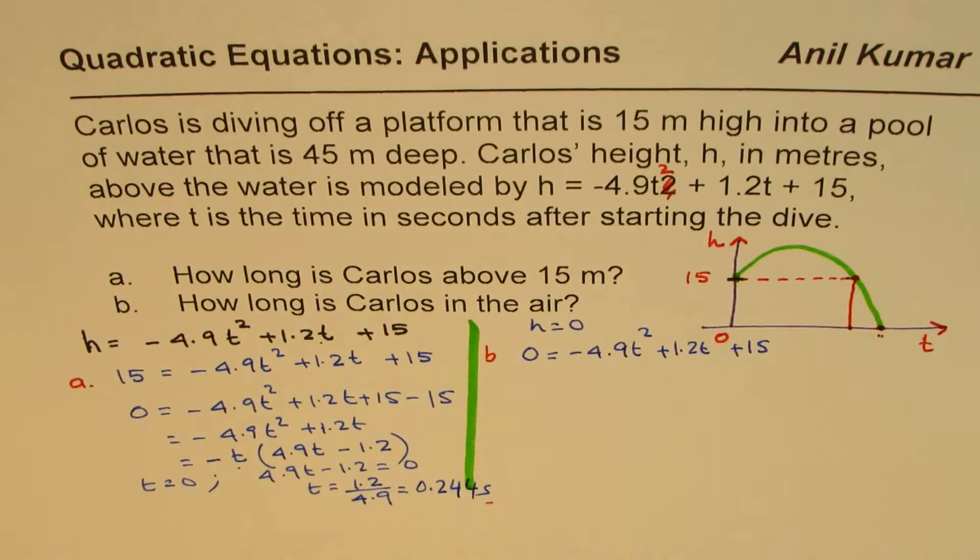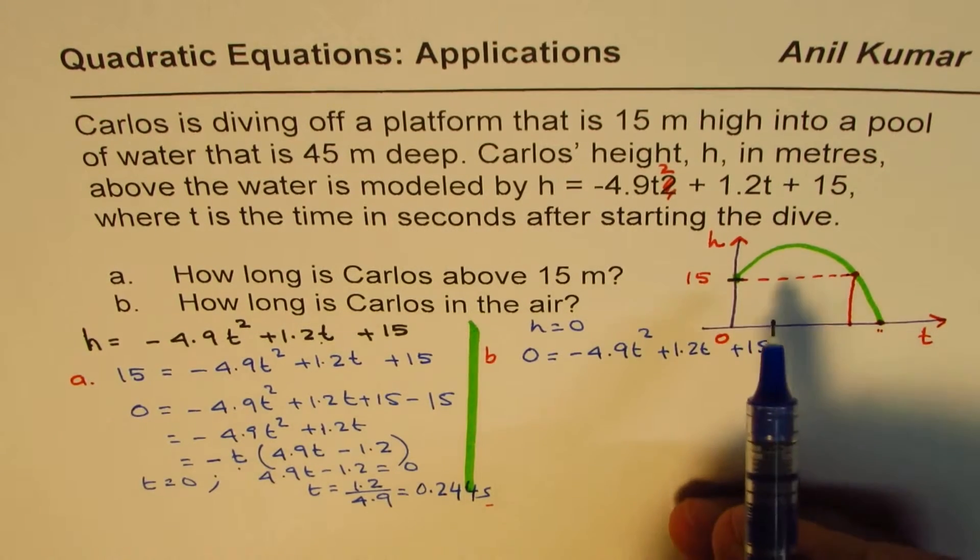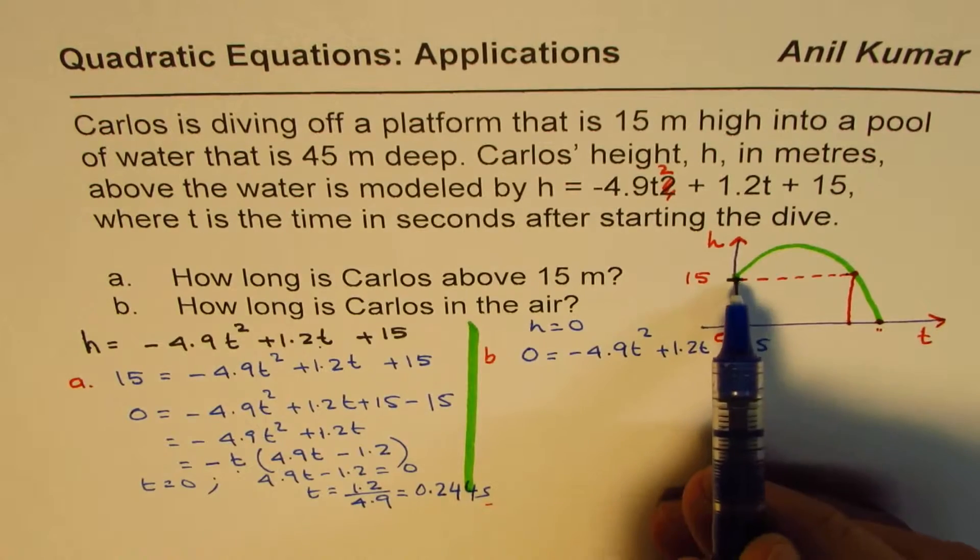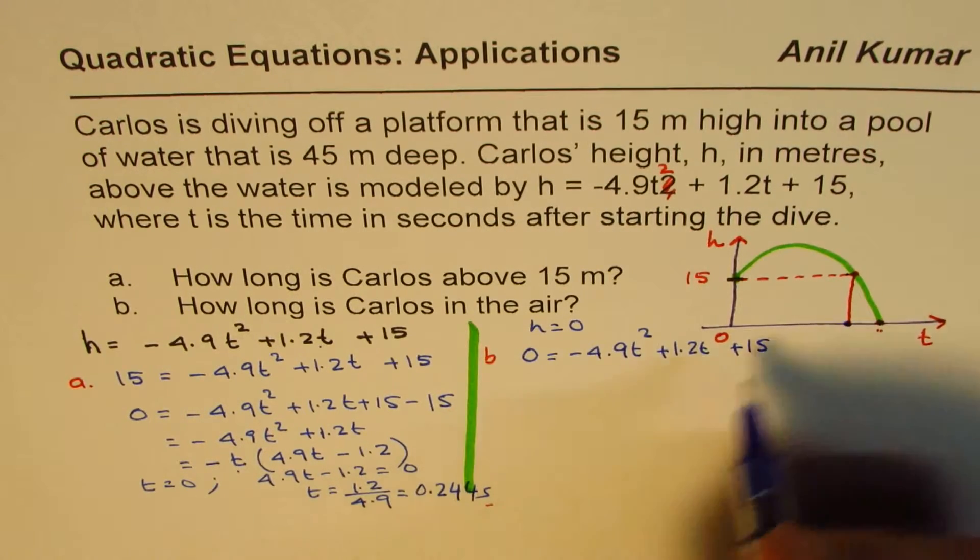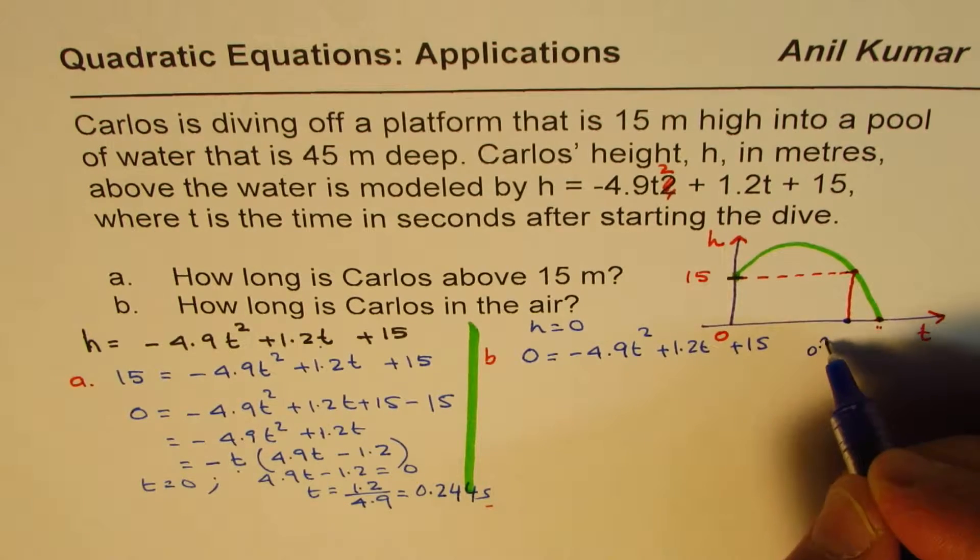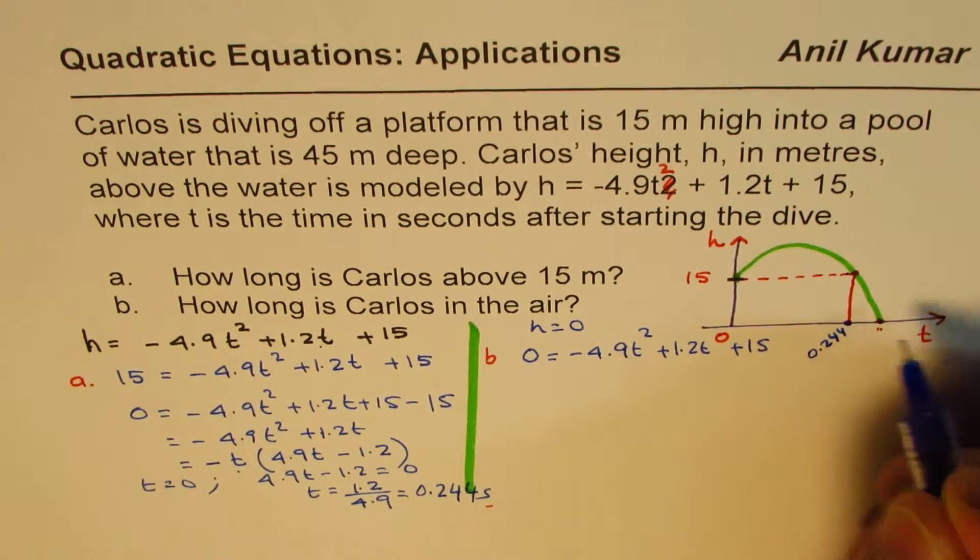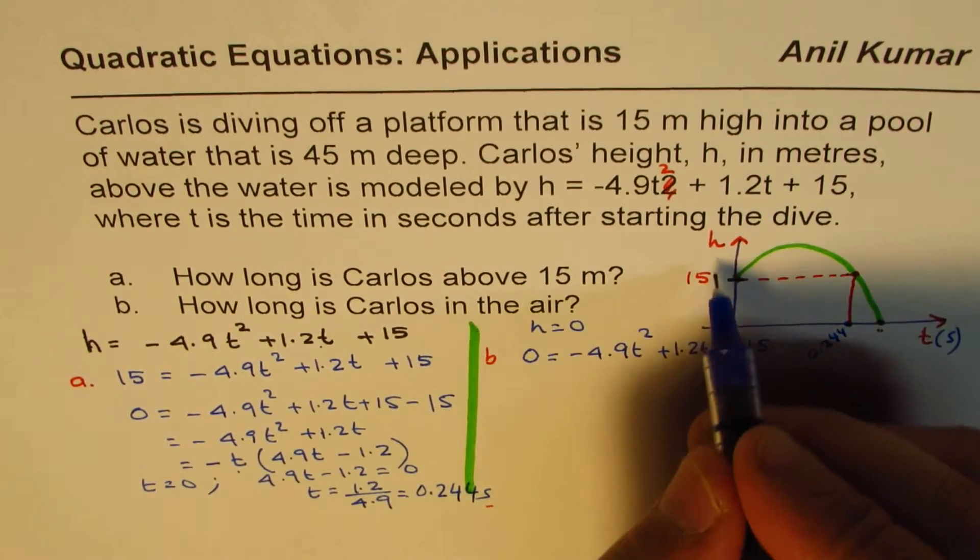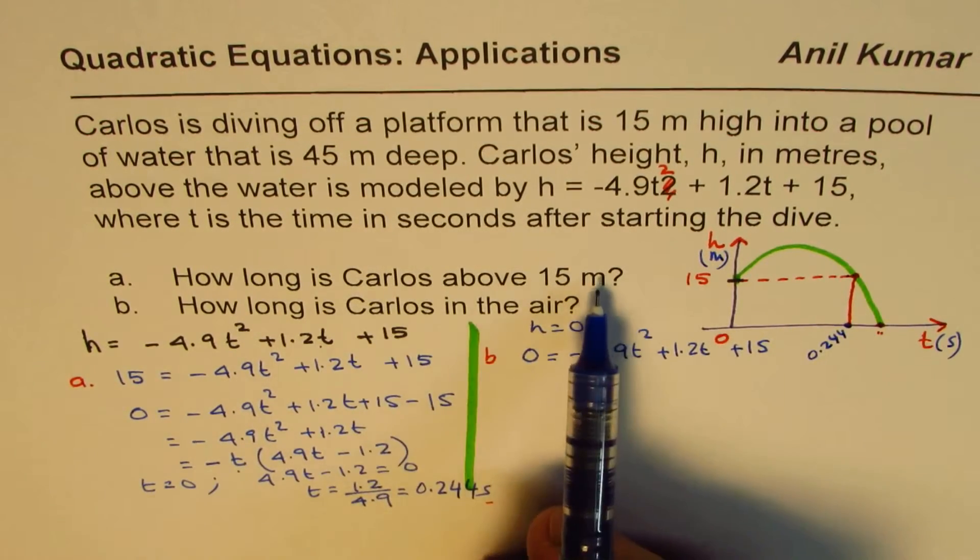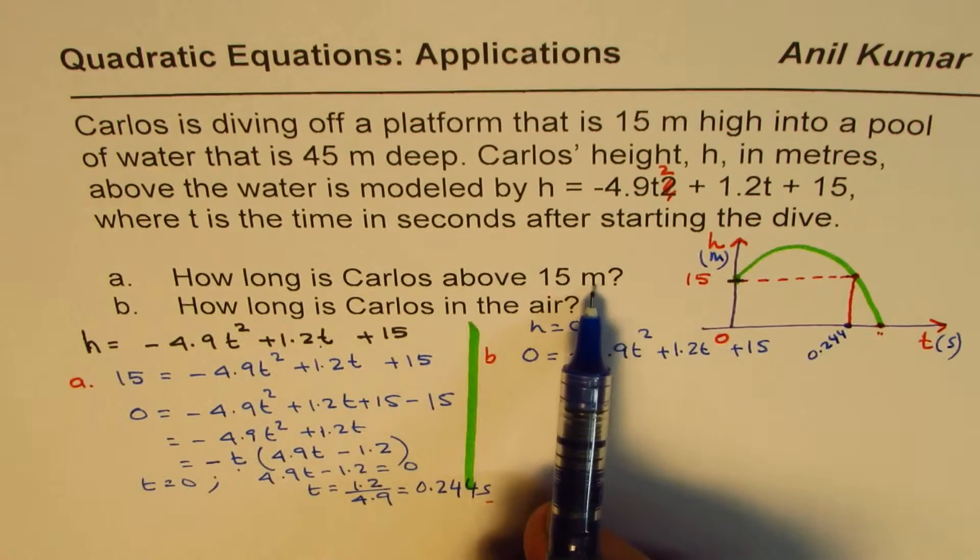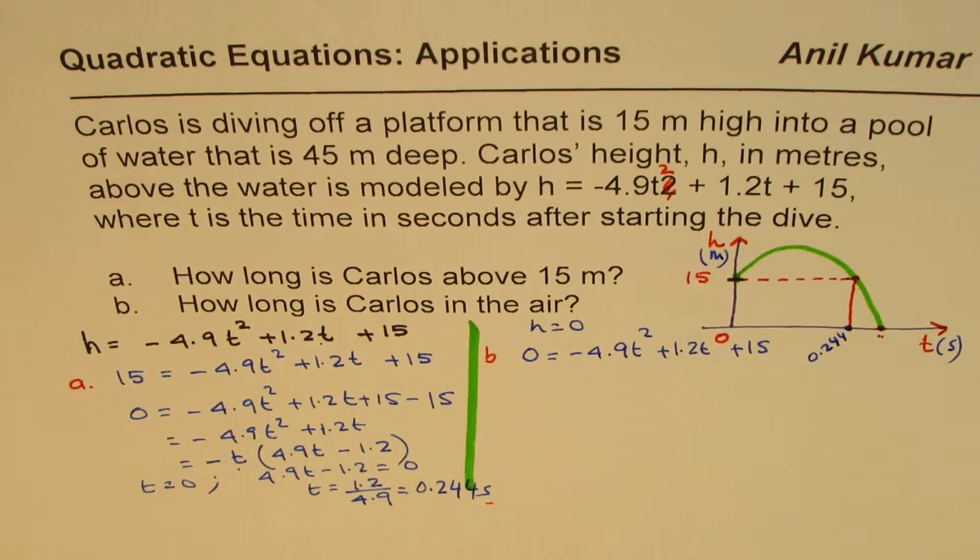That is the answer. For from 0 to that much time, this time will be 0.244 seconds. Do you see time is given in seconds here, height in meters? For that long, Carlos is going to be above 15 meters.